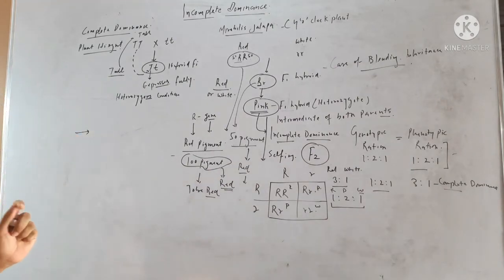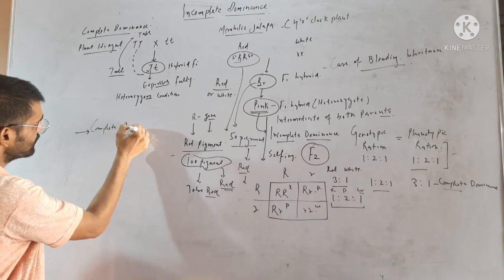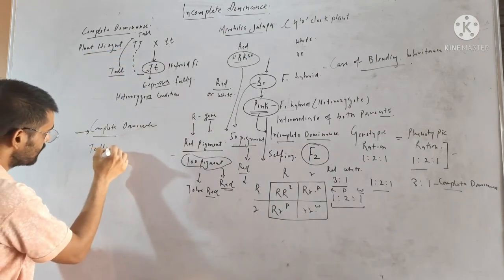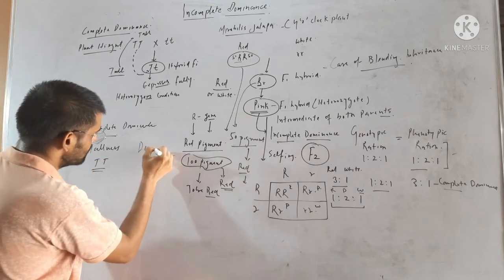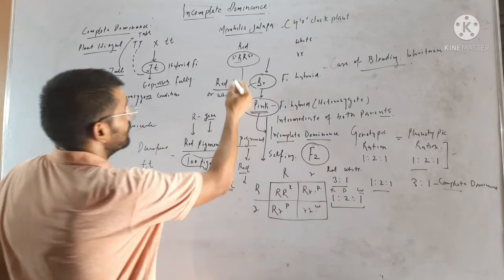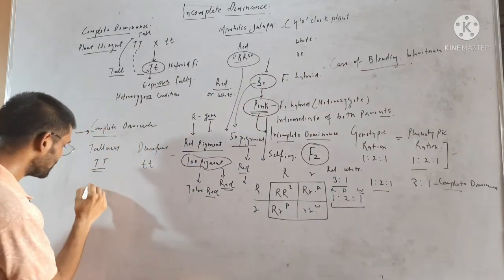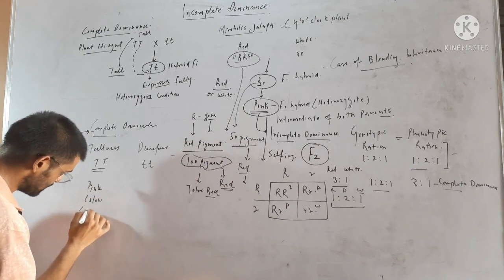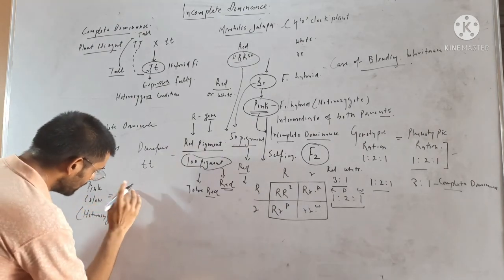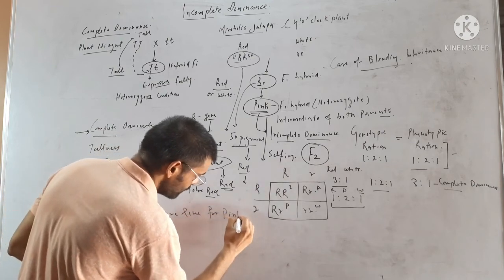Another conclusion from incomplete dominance: in complete dominance you can get a pure line — for tallness (TT) or dwarfness (tt). Similarly, in incomplete dominance you can get a pure line for red (RR) and for white (rr). But for pink color — the heterozygous condition — it will always be heterozygous, so there will be no pure line for pink color.